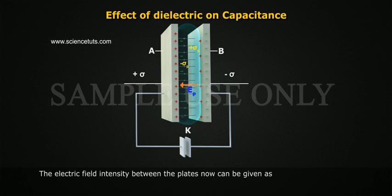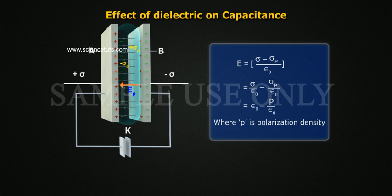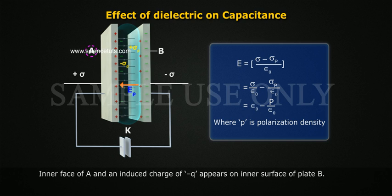The electric field intensity between the plates now can be given as E equals sigma minus sigma p by epsilon naught, which equals sigma by epsilon naught minus sigma p by epsilon naught, which equals E naught minus P by epsilon naught, where P is polarization density. Inner face of A and an induced charge of negative q appears on inner surface of plate B.